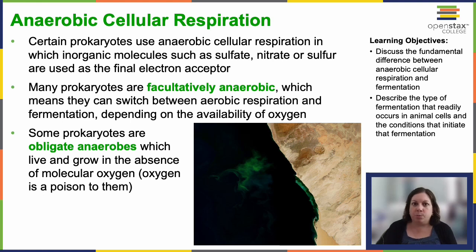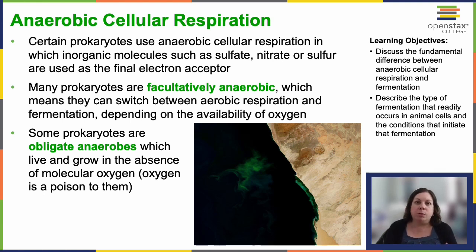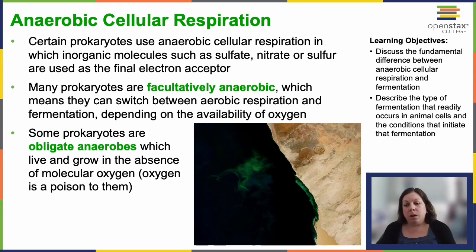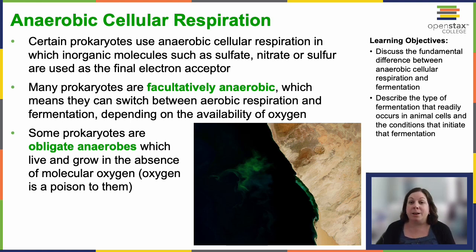If you've ever been to Yellowstone National Park, they have water sources with crazy high temperatures or really high sulfur levels — that's where we find some of these organisms. Other bacterial fermentation processes exist as well. Many prokaryotes are what we call facultative anaerobes, meaning they can switch back and forth between aerobic respiration and fermentation depending on oxygen availability.